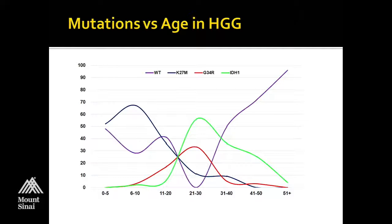You can get K27M mutations out into adulthood, even into the 40s, 50s, or 60s, but the peak is occurring somewhere between ages 5 and 15. If we look at the G34 mutations, while we do see these in a pediatric practice in teenagers, the majority are actually happening in the young adult population — people in their 20s and early 30s.